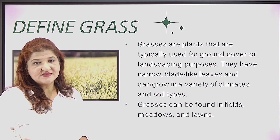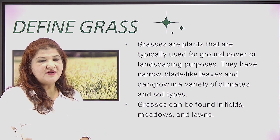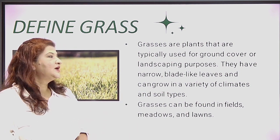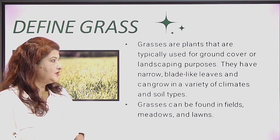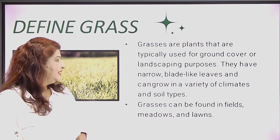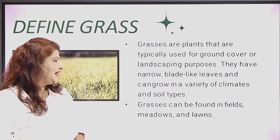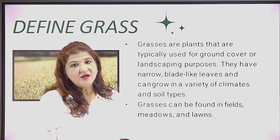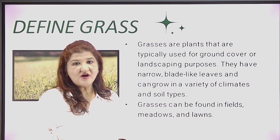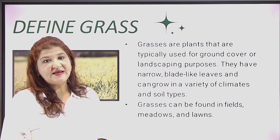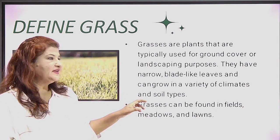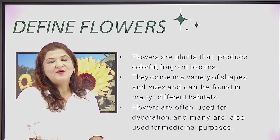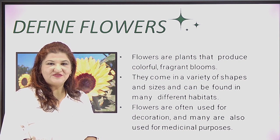The next category is grasses. Grasses are plants that are typically used for ground cover or for landscaping purposes. They are narrow and have blade-like structures, and they can grow above the soil but not very high. Grasses can be found in fertile plain regions, farms, open areas, or meadows. We find grass even after one shower of rain falls, because we will find small green grasses growing everywhere. And it looks so beautiful after rain.